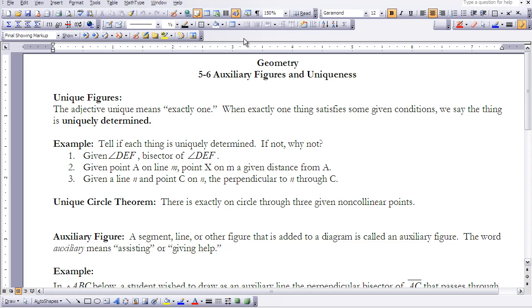But to begin the video, we're going to talk about unique figures, and first we'll define it. The adjective unique means exactly one. When exactly one thing satisfies some given conditions, we say the thing is uniquely determined.